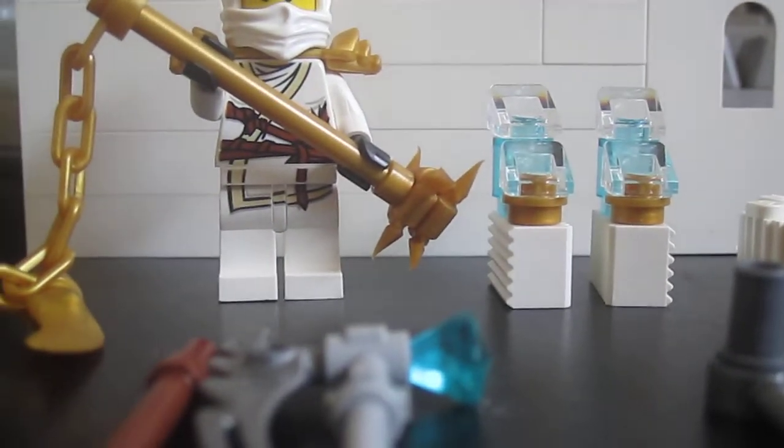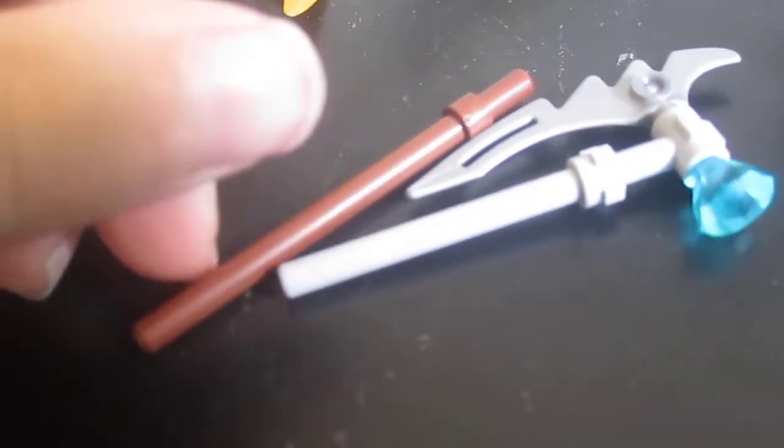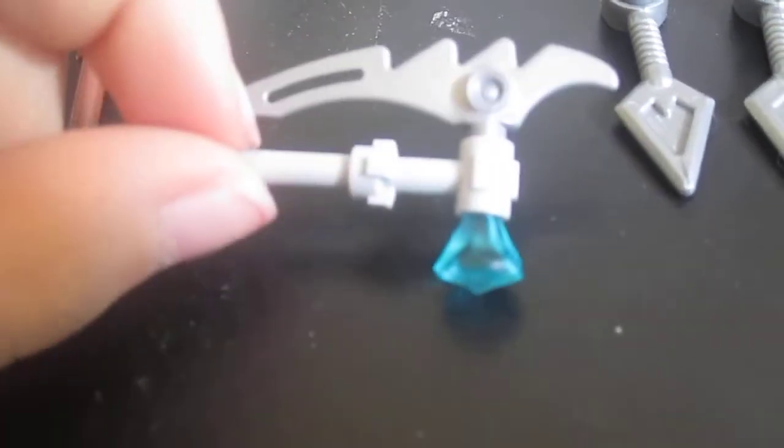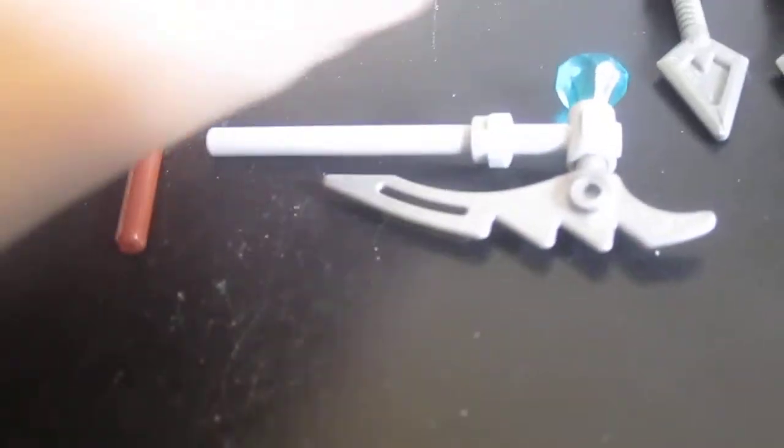So the booster pack comes with, of course like most spinners and booster packs, these brown sticks. And then it comes with this blade with a jewel on the end, this big blade.